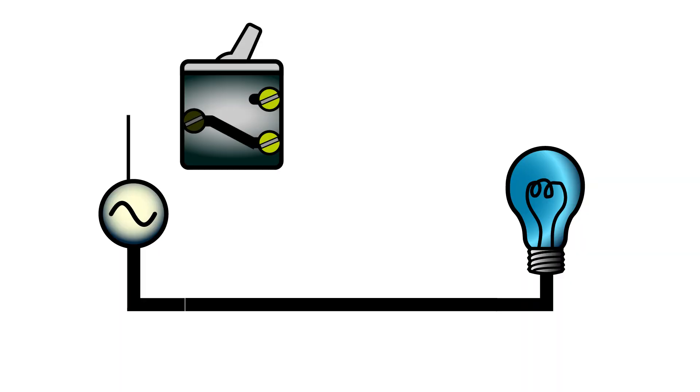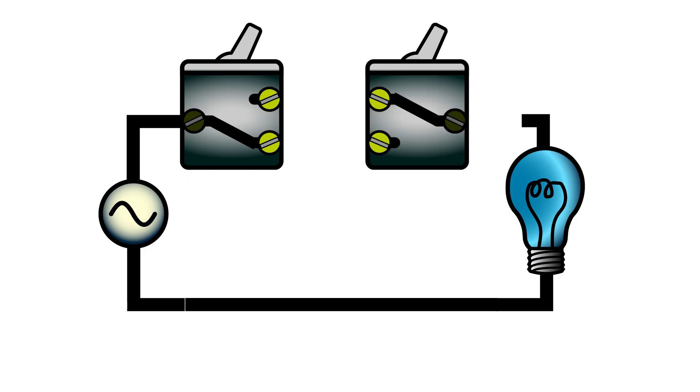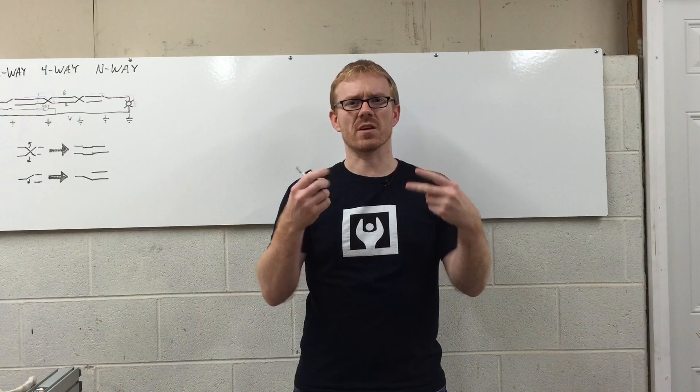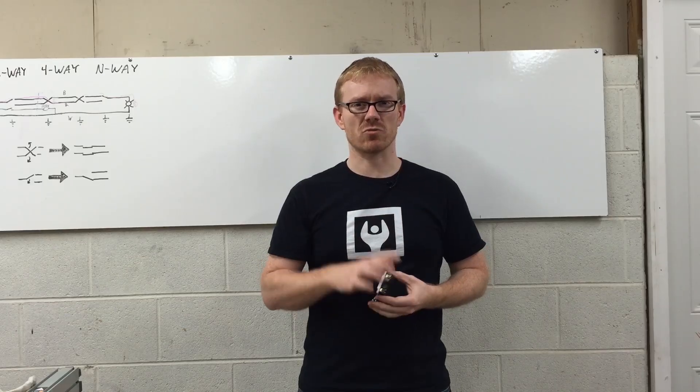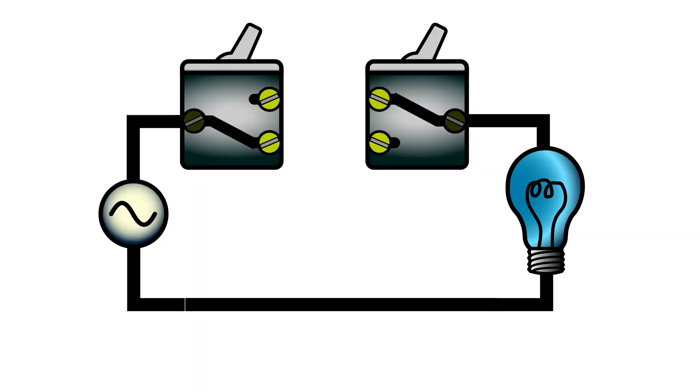In a three-way circuit, the first switch is connected to the source, the second switch is connected to the load. The two switches are connected together using travelers. These traveling pairs are really the key to multi-way switching.